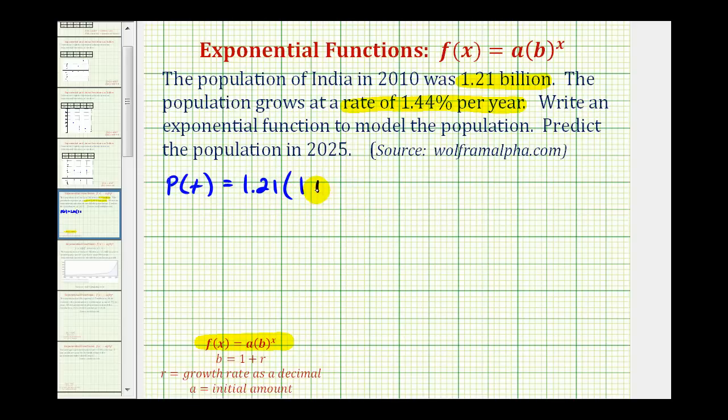Our base is going to be one plus the annual growth rate expressed as a decimal. Right now we have r equals 1.44%. As a decimal, that would be 0.0144. So we have one plus 0.0144 raised to the power of t.